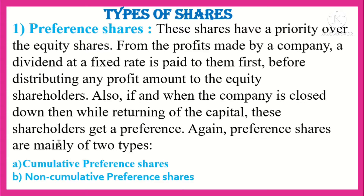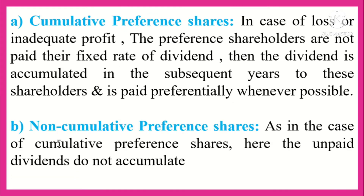Equity shareholders will also get dividend, but preference shareholders are paid first. If a company is closed, preference shareholders get their capital money back first as well. Preference shares are further divided into two types: cumulative and non-cumulative. In cumulative, if there is a loss or inadequate profit, the dividend is accumulated and paid to the preference shareholders in subsequent years whenever possible.